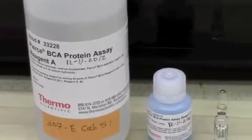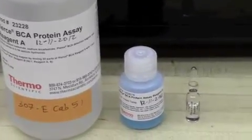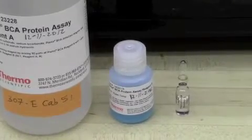You will need the Pierce BCA Protein Assay Kit, complete with Reagent A, Reagent B, and an ampoule of BSA, as well as two microtiter plates.